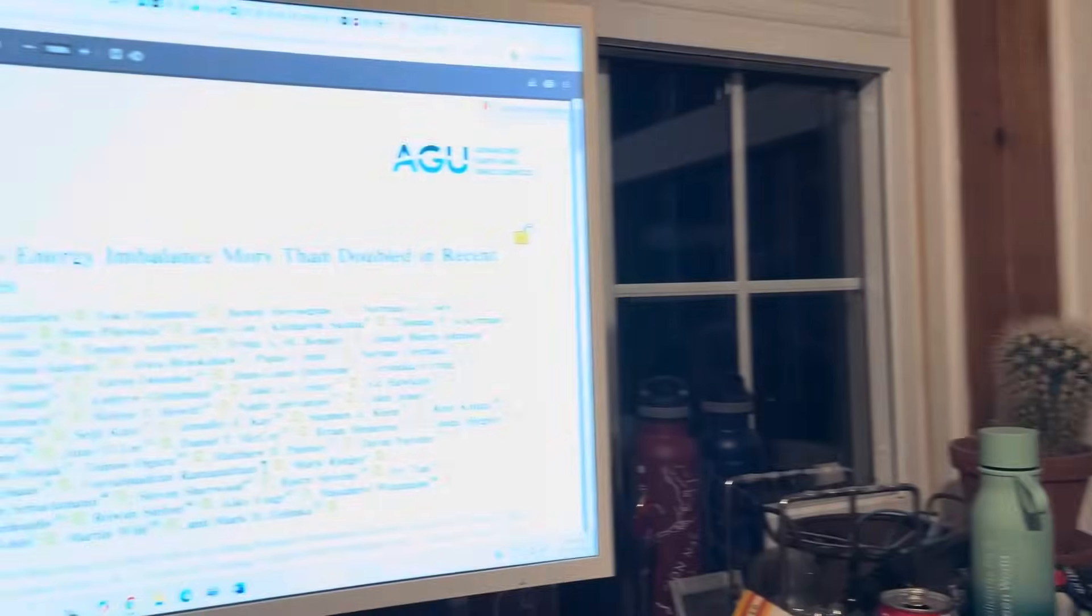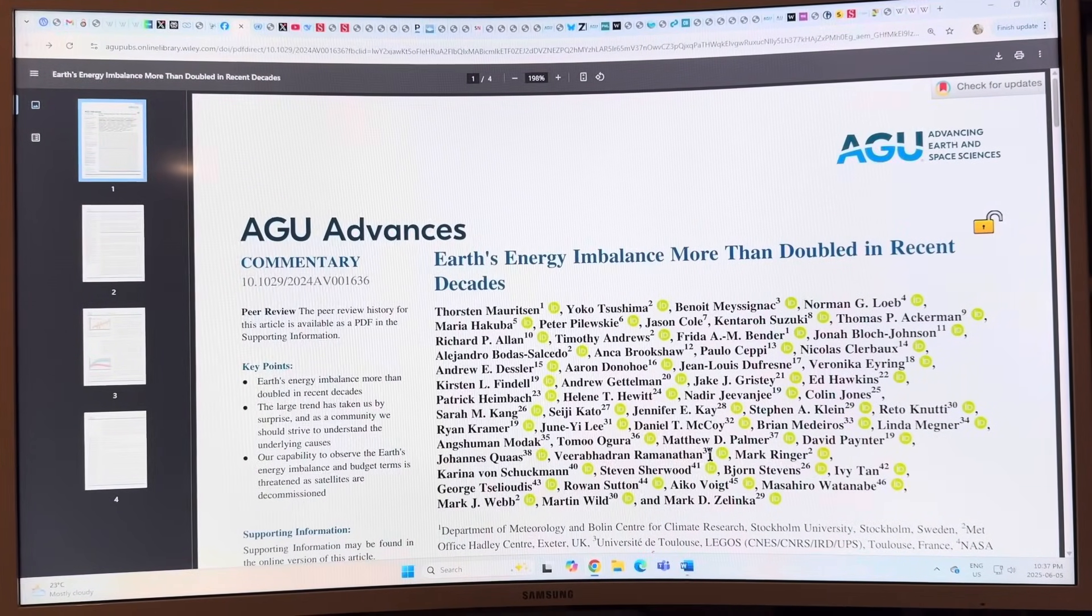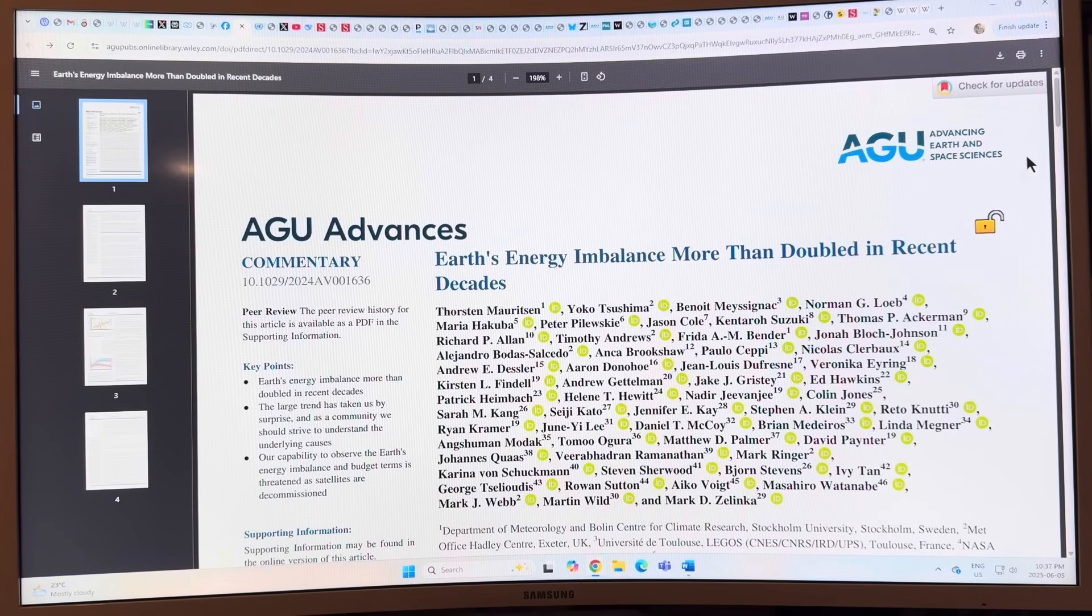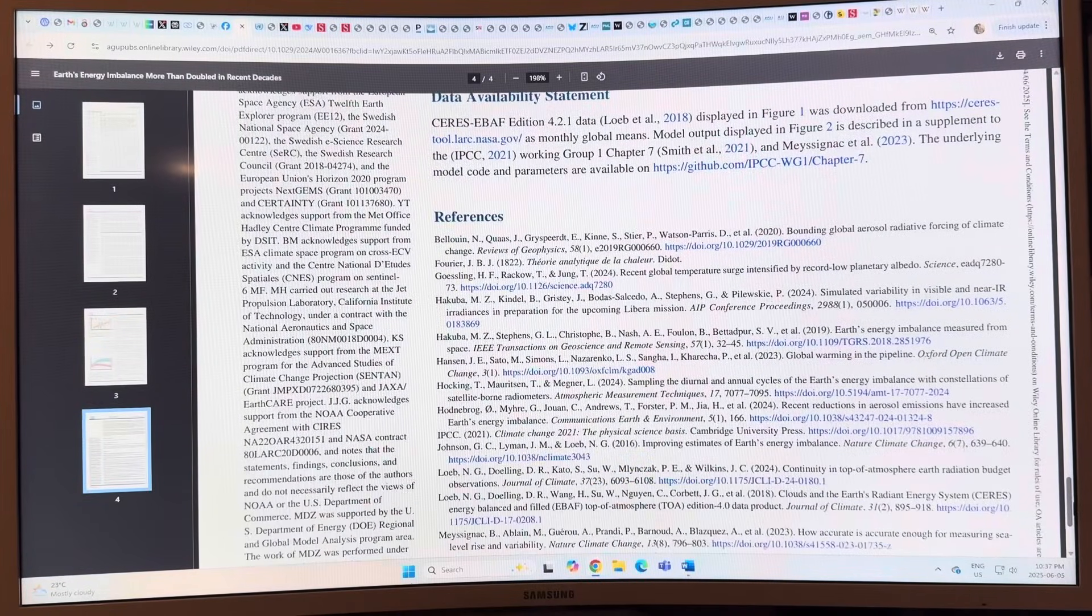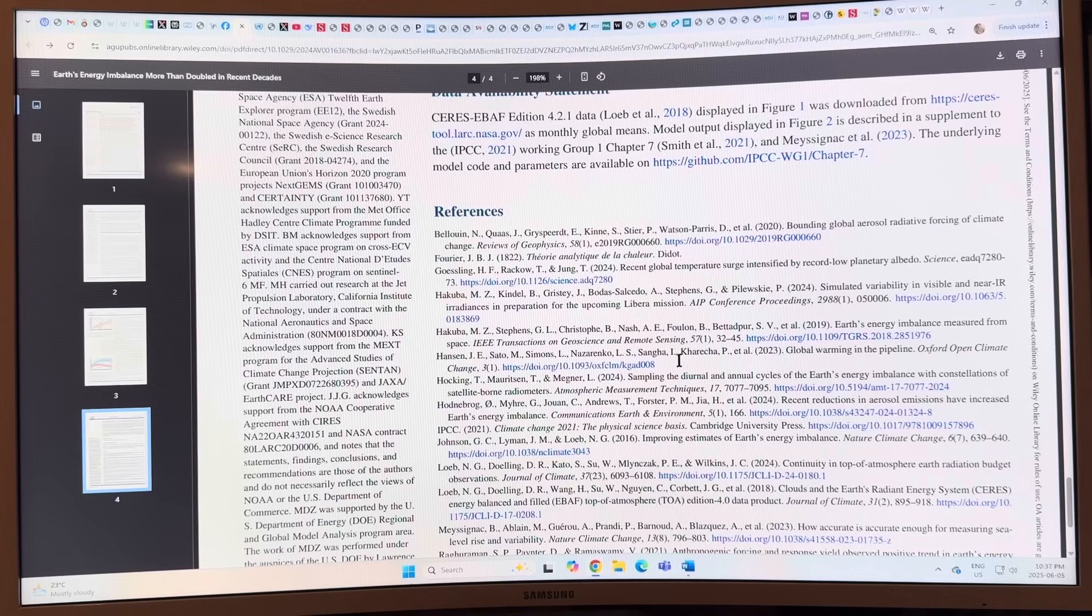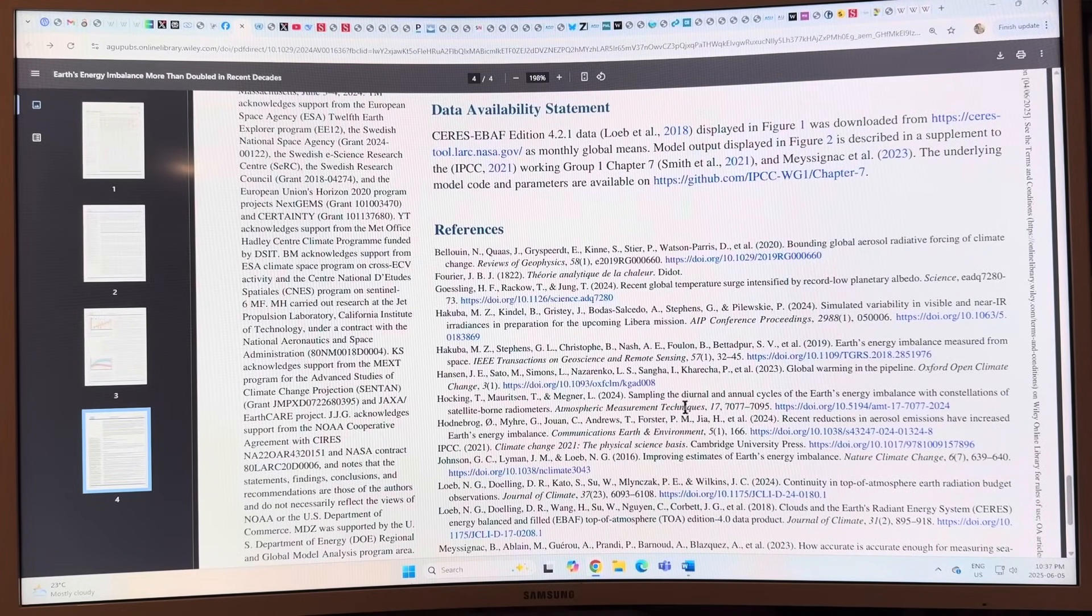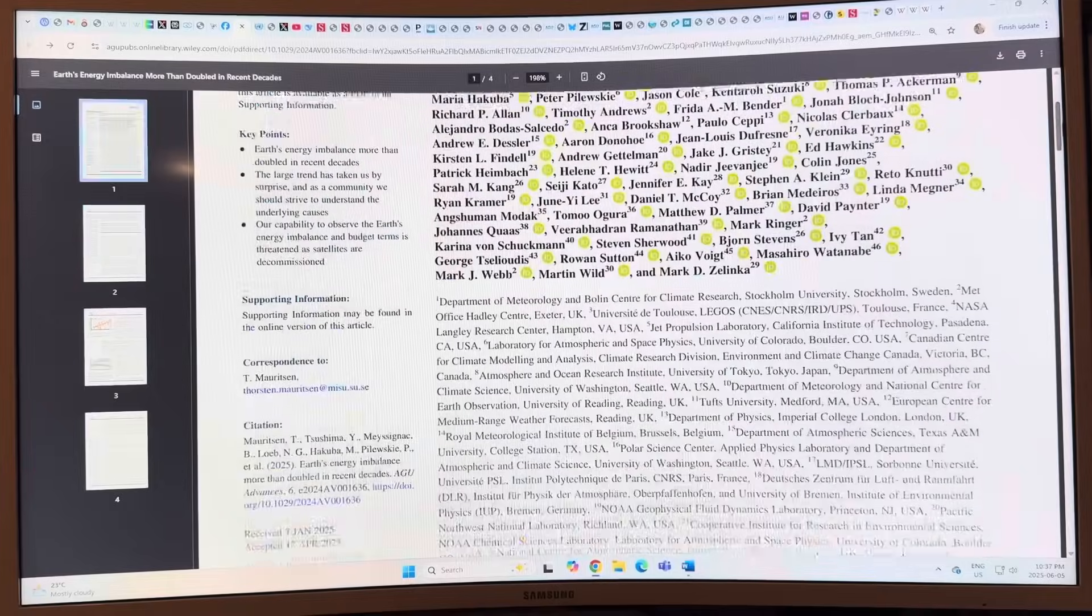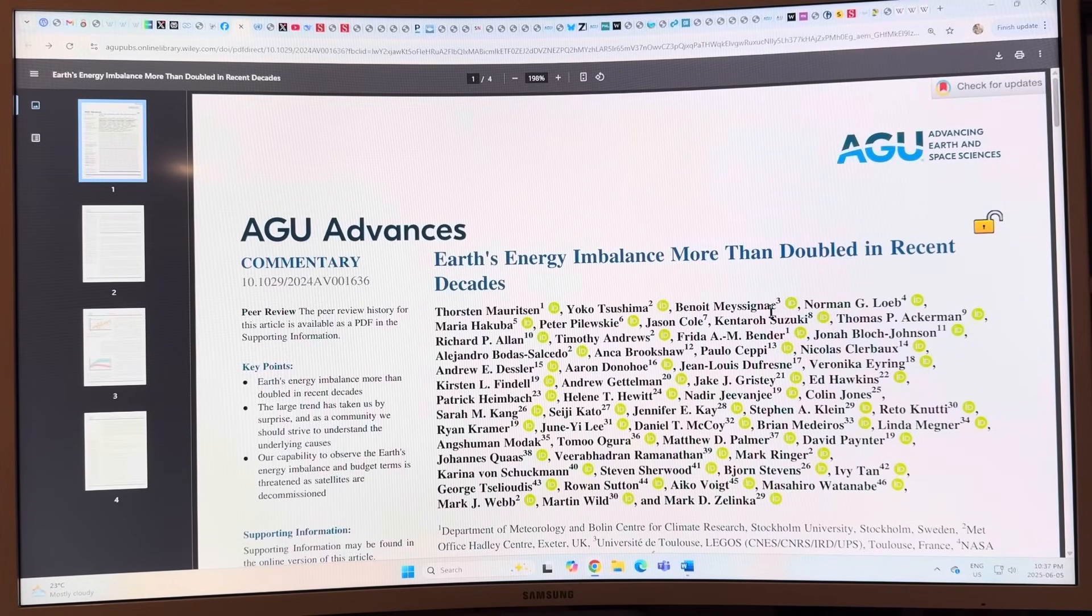And of course, who's been saying this for a long time? Well, the one and only James Hansen. Is there even a reference to James Hansen in this paper? Did they talk about his work? I look at the author list, and they do mention the global warming in the pipeline 2023 paper. That's about it. At least I'll give them credit for at least mentioning Hansen's work because he's clearly the leader in this. He's been talking about sulfur in marine shipping fuels for quite a while.